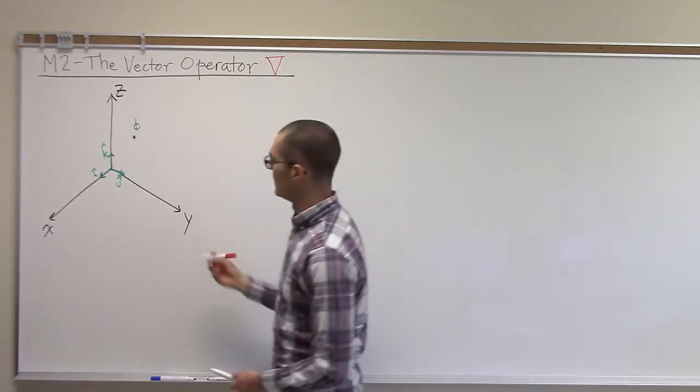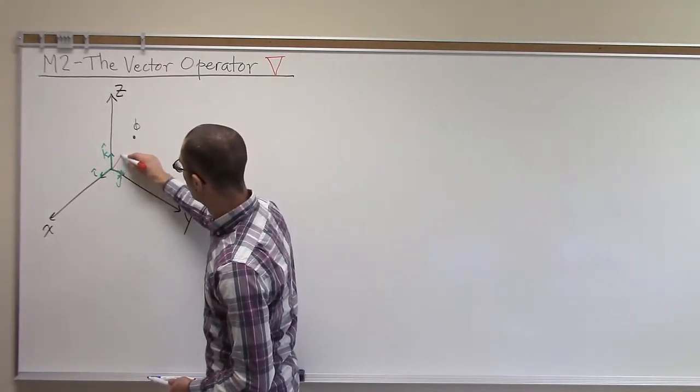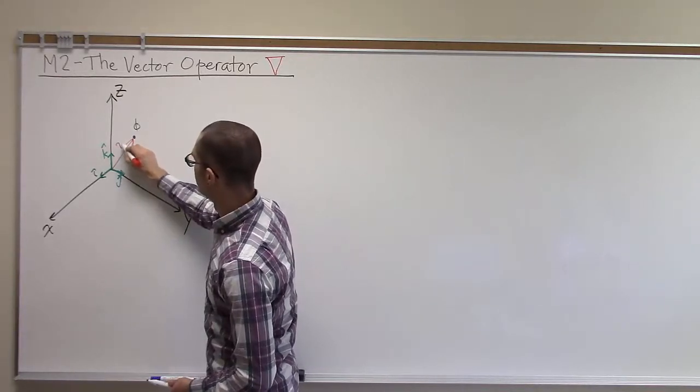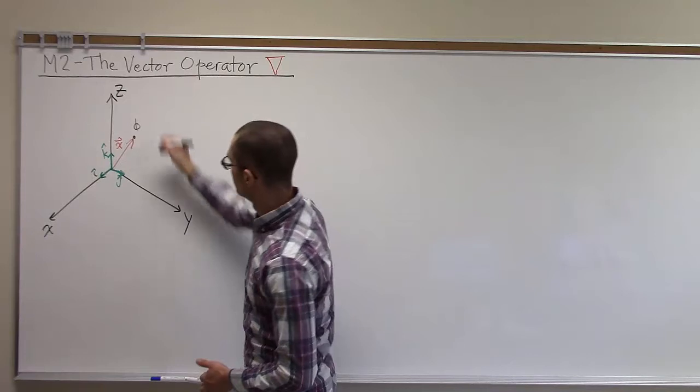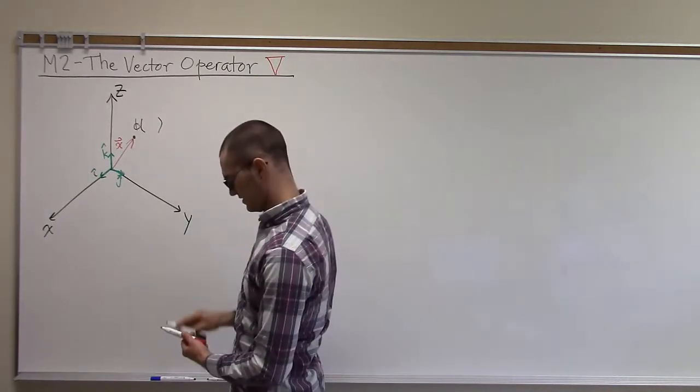And it's located at some point given by this vector x. So we'll say that's phi of x.